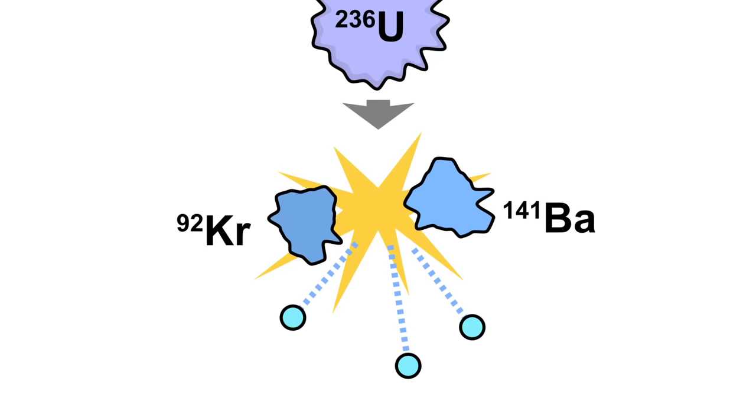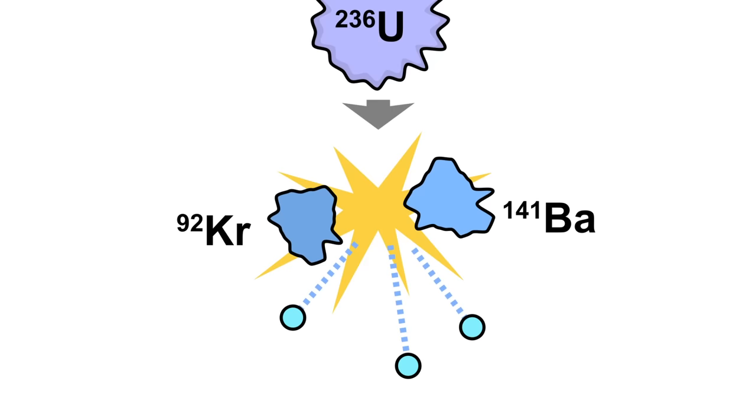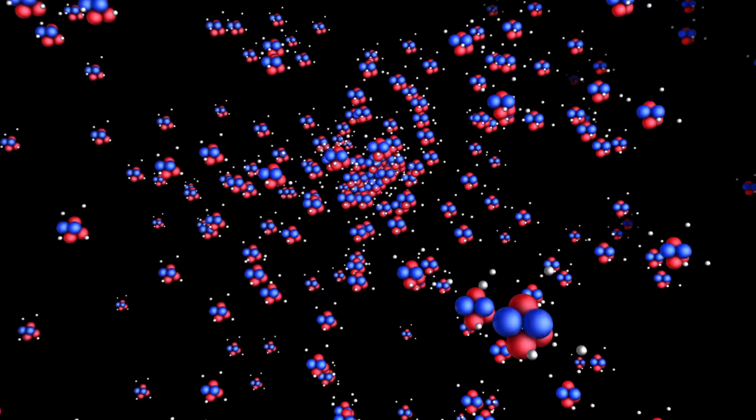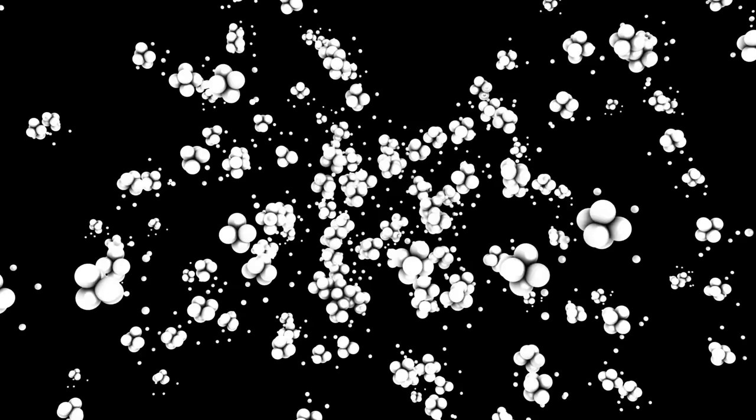But here's the exciting part. When uranium splits, it releases even more neutrons. This got scientists thinking. Could these free neutrons start a chain reaction that releases a massive amount of energy? If so, they could create a super powerful weapon. And that's how the discovery of nuclear fission by Enrico Fermi led to the creation of the first atomic bomb. By splitting atoms and causing a chain reaction, scientists were able to release an enormous amount of energy and create a weapon like no other.